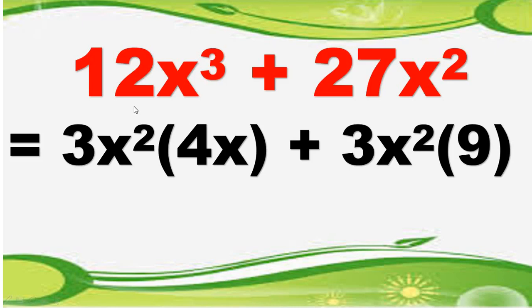Next step. Let's again go back with the given problem: 12x cubed plus 27x squared. You are going to express each term of the given polynomial as the product of the greatest common factor and its other factor. So 12x cubed is equal to 3x squared multiplied by 4x. So 27x squared is equal to 3x squared multiplied by 9. But how do we obtain 4x? How do we obtain 9? You just simply divide each term of the given polynomial by their GCF.